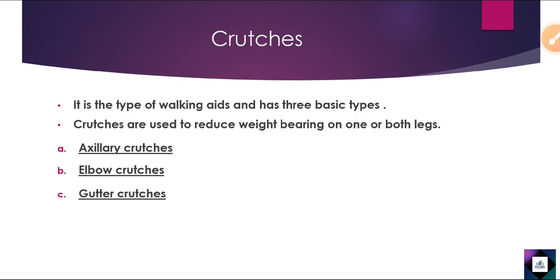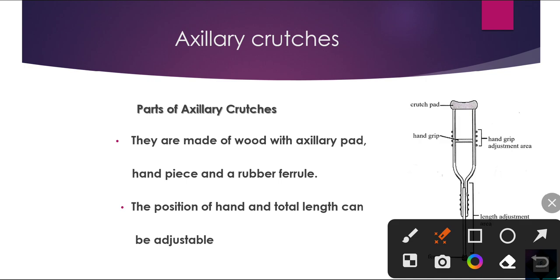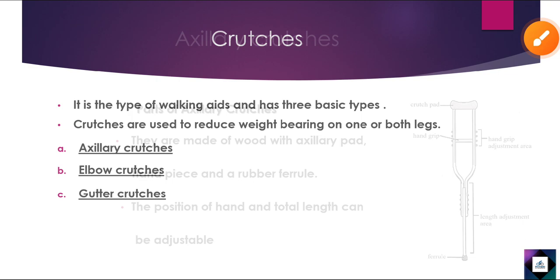There are three categories: A, B, and C — axillary, elbow, and gutter crutches. We will discuss them one by one. From an SAQ point of view: what are the parts of axillary crutches? They are made of wood with an axillary pad, handpiece, and a rubber ferrule.